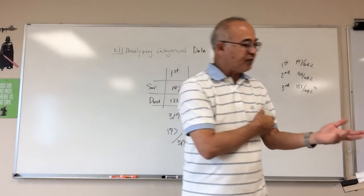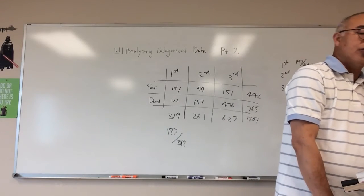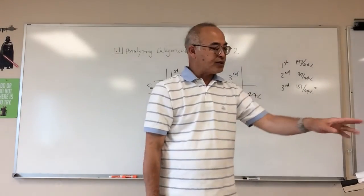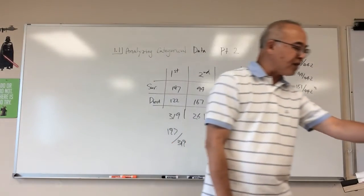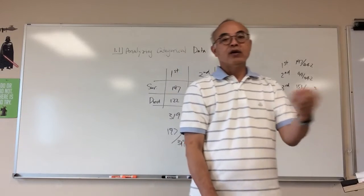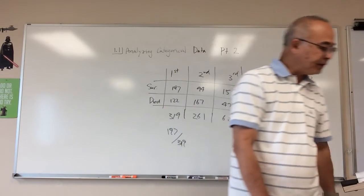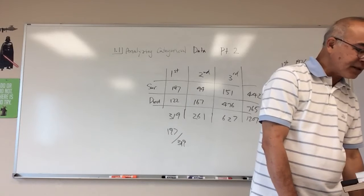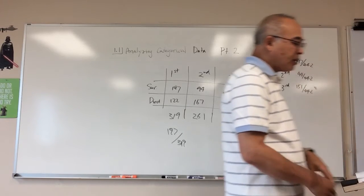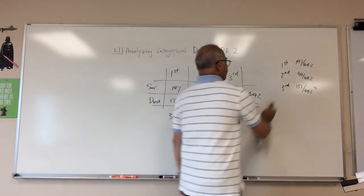Page 20 shows that if there were no association, both segmented bar graphs would look almost the same — in that case there would be no association. Alright, let's go back and revisit the Titanic disaster example.